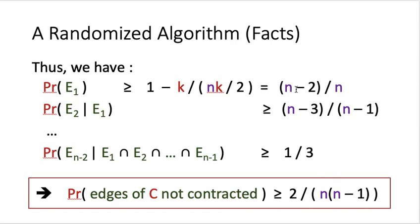You can see that terms like (N−4)/(N−2) cancel with the previous denominator, leaving only the first two denominator terms and the last two numerator terms uncancelled. That gives us 2/(N(N−1)). This is the full description and analysis of the randomized min-cut algorithm. Thank you.